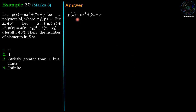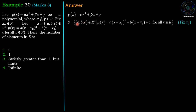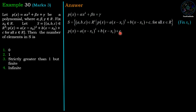We have given P(x) equal to alpha x squared plus beta x plus gamma. The set S contains (a, b, c) belonging to R cubed such that P(x) equals a(x minus x0) squared plus b(x minus x0) plus c, for all x belonging to R, where x0 is a fixed number. Now we are going to find the values of a, b, c.